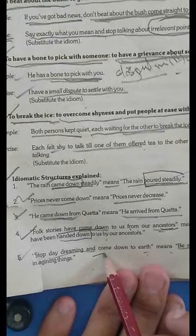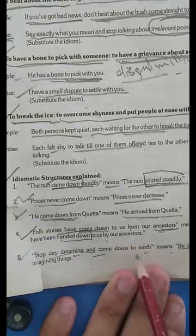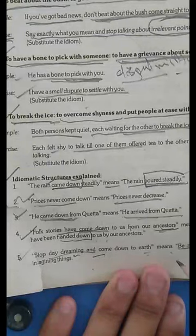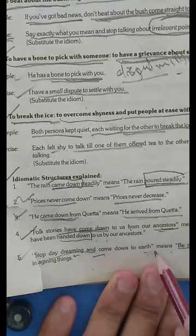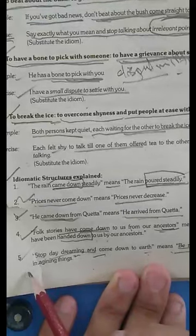Number five: 'Stop day dreaming and come down to earth.' It means stop dreaming and come back to reality. 'Come down to earth' means be realistic and stop imagining things. These are the idiomatic structures and usage according to the sentences.